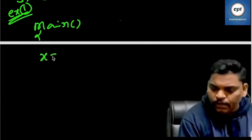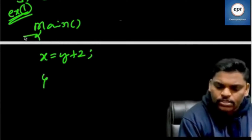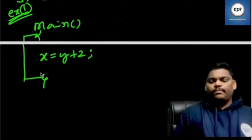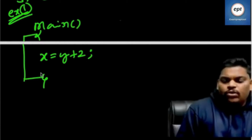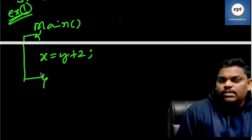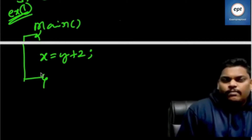30 programs — time complexity. I will start now. The first program: main. X is equal to Y plus Z. This is the first program. What is the time complexity of this program?